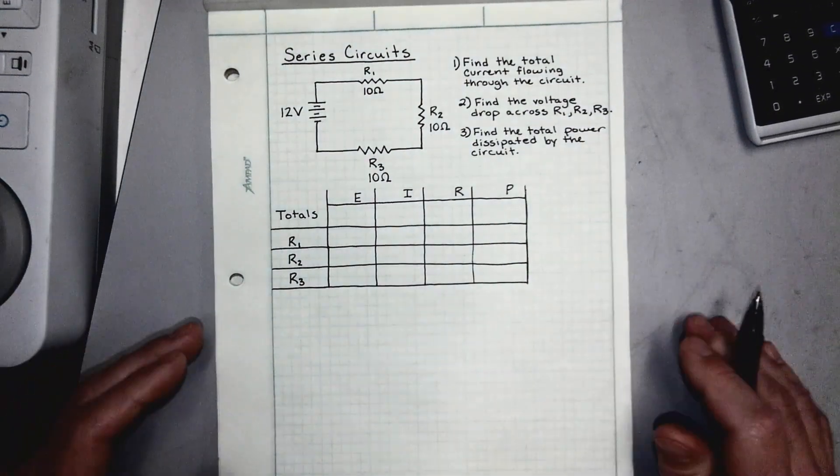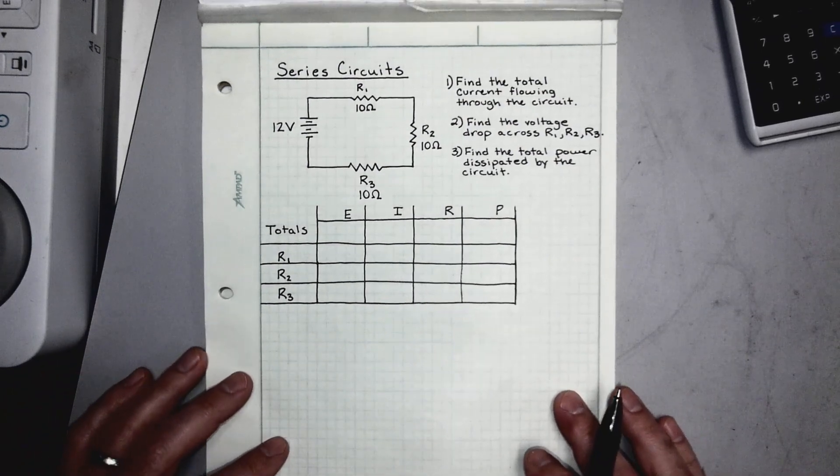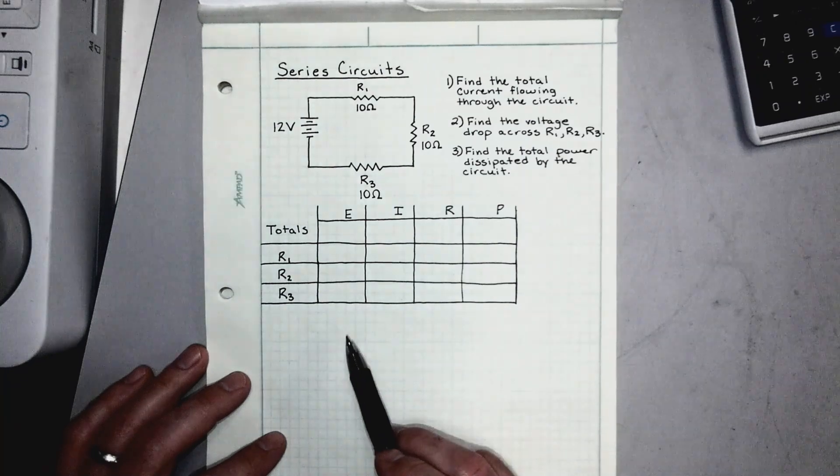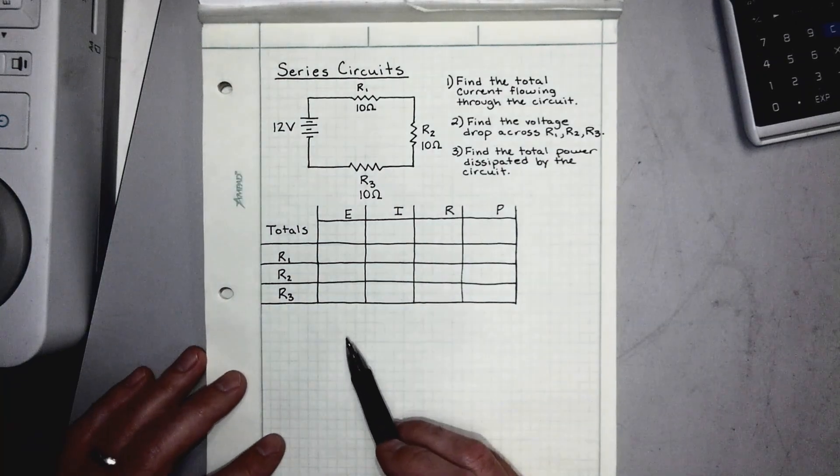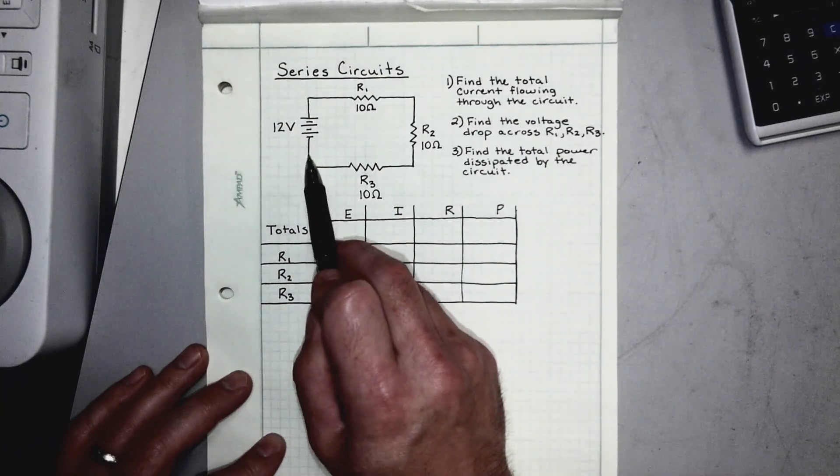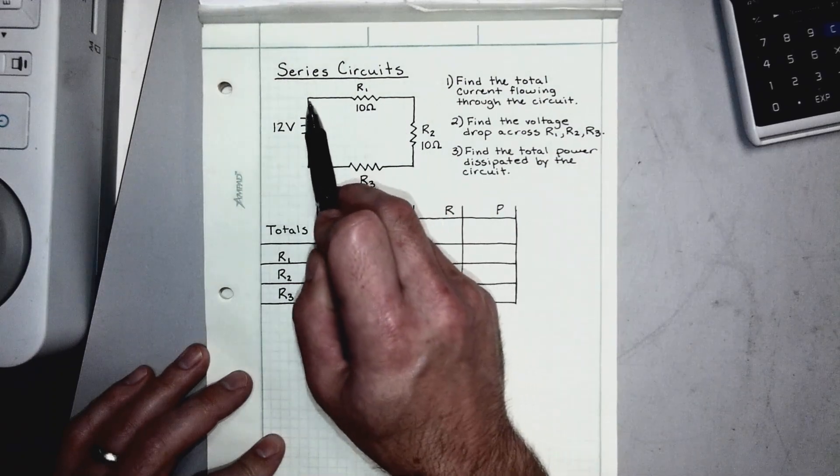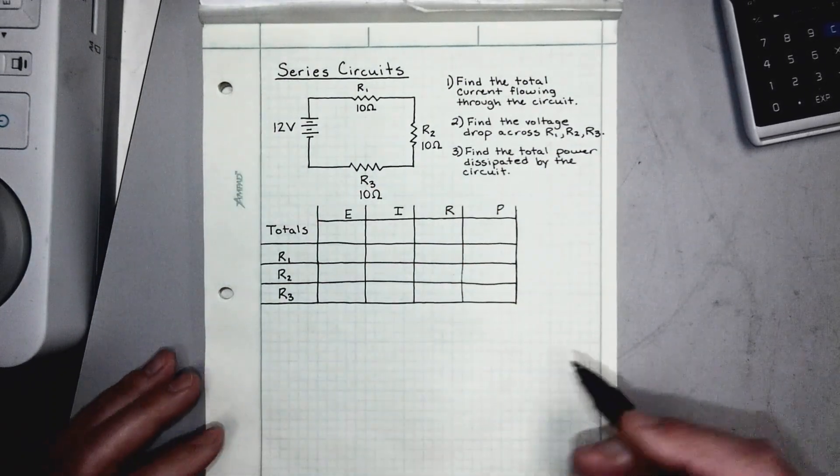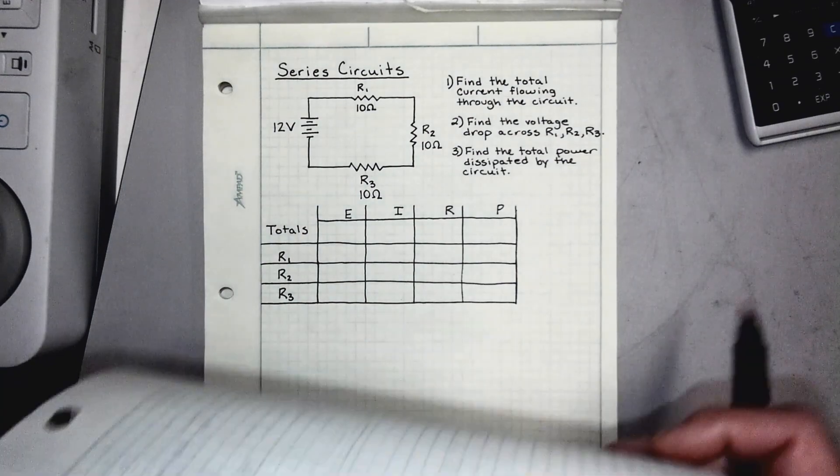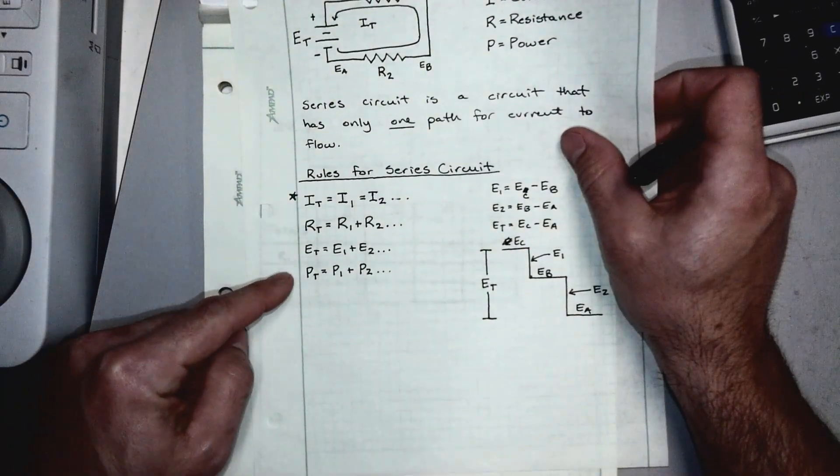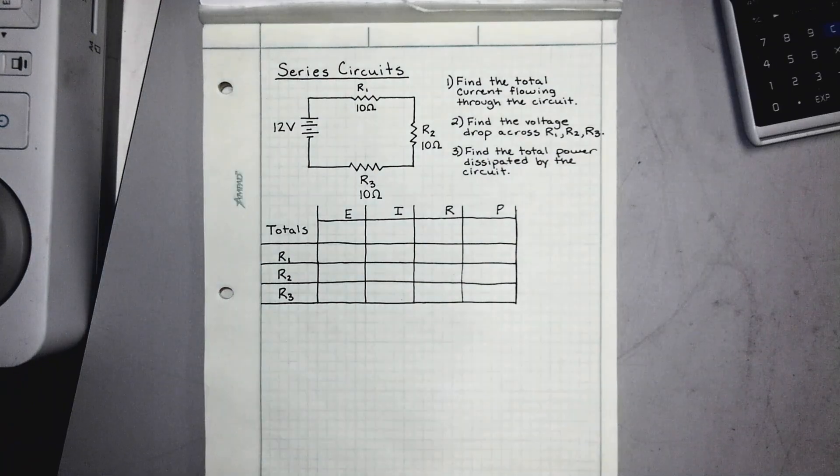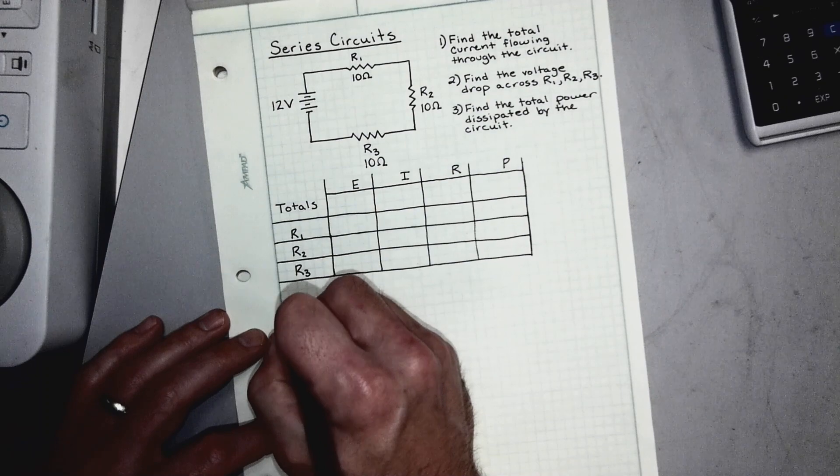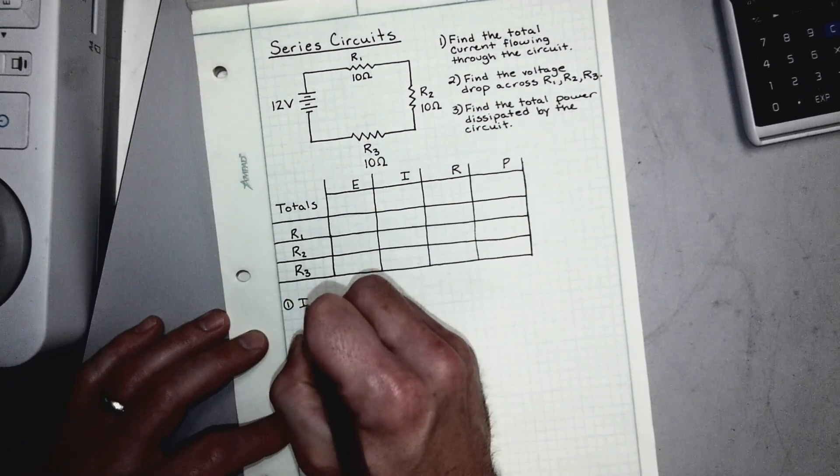The first step to solving any circuit is to identify the circuit. This one's been identified for you, but if we remember our definition for a series circuit, it's that a series circuit has one path for current to flow. So when we only see one path for current to flow, we are using those series rules. This is a series circuit—step one is done. So step one is identify the type of circuit.